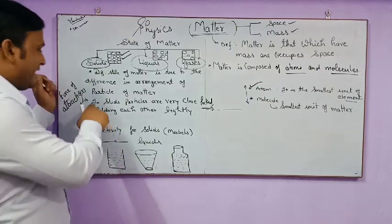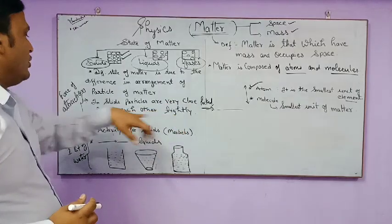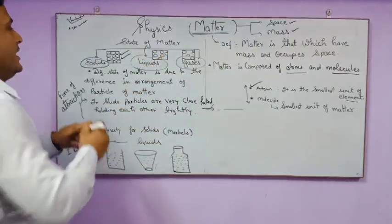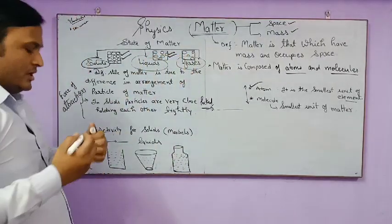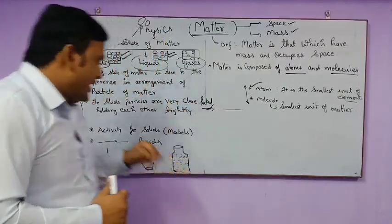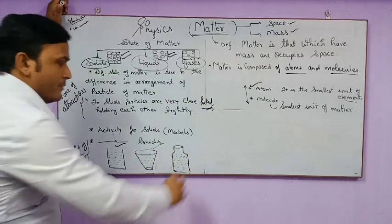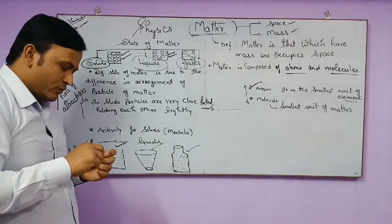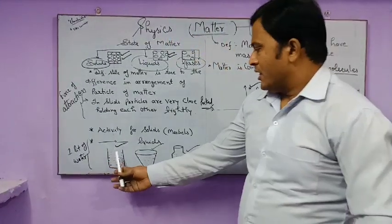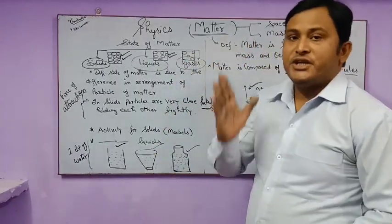In liquids, the molecules are not as closely packed as in solids, but more closely packed than in gases. Because of this, liquids can flow. They have a definite volume but no definite shape. For example, if you pour equal amounts of water into containers of different shapes — a wider container, a narrower one, and a bottle — the water takes the shape of each container.